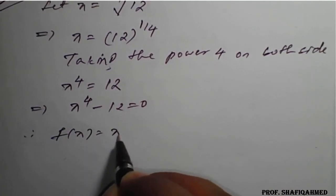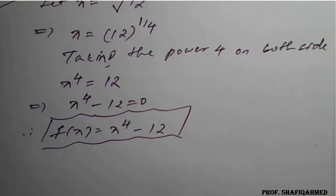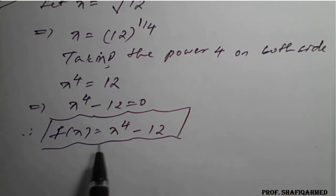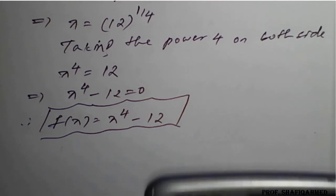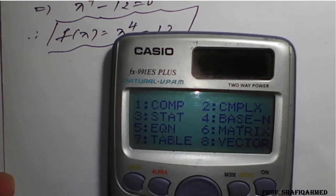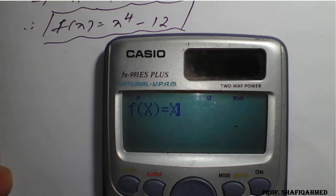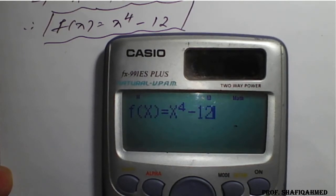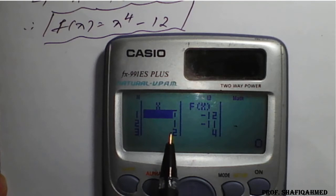Therefore, f(x) = x⁴ − 12. This is the equation we need to solve to get an approximate value. We need to check where f(x) is positive and negative. We will type this equation in the calculator: go to Mode, then Table, then type x⁴ − 12. Starting value is 0, end value is 5, step size is 1. You will find: f(0) = −12, f(1) = −11, f(2) = 4.